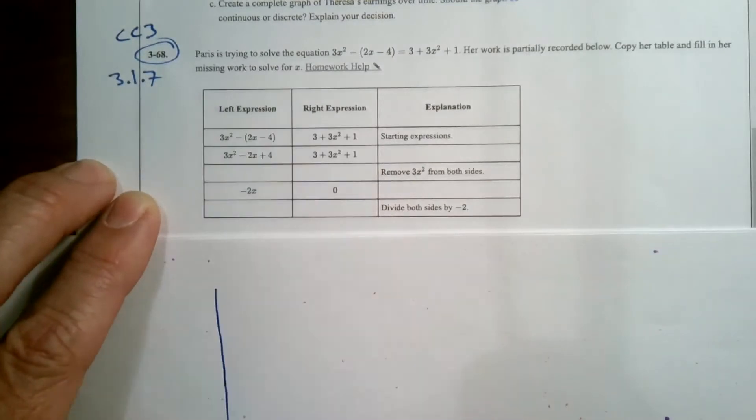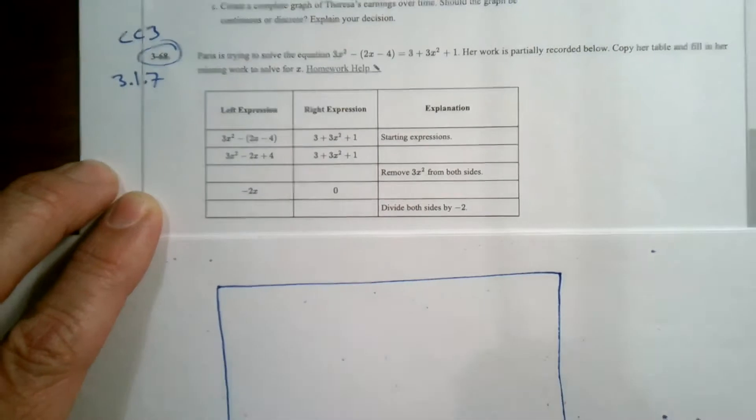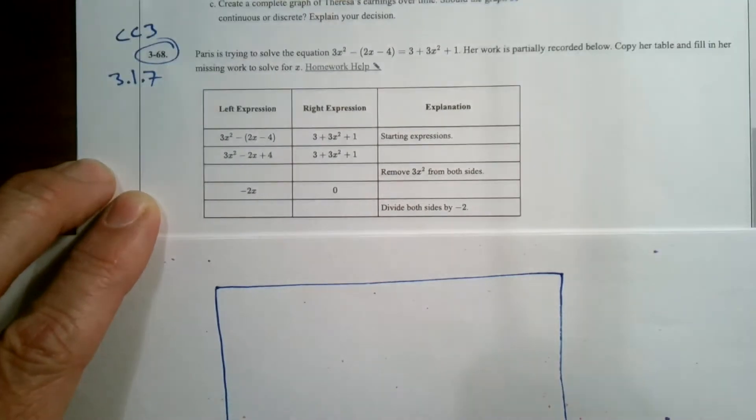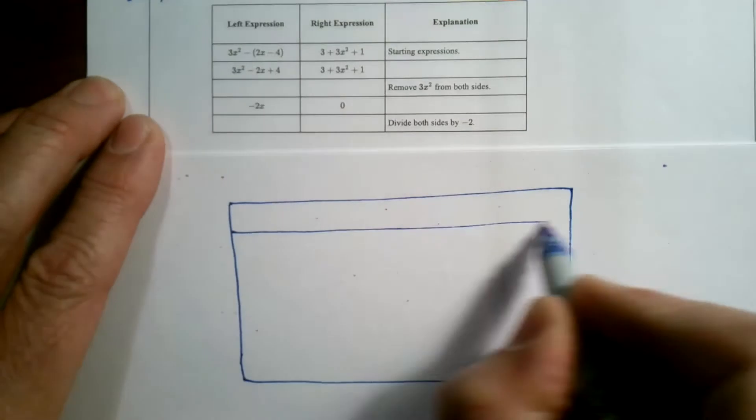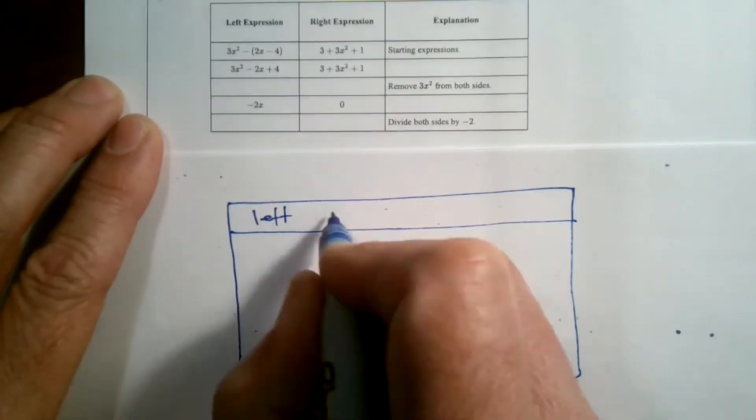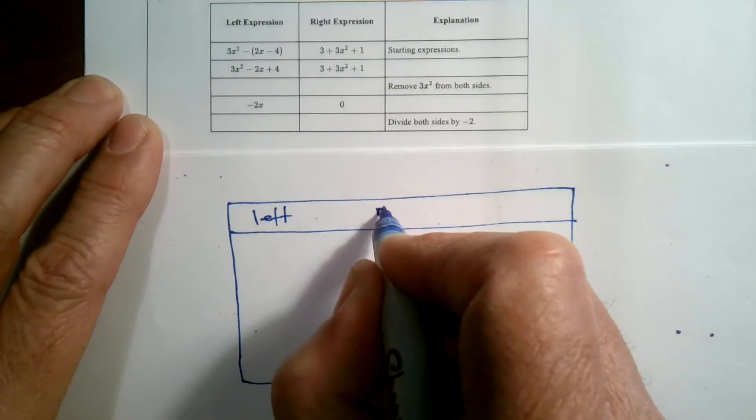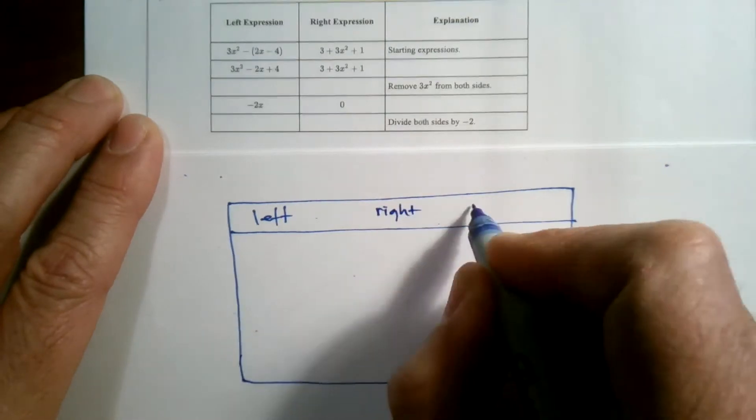So let's do that. Let's copy the table so I can go through this process and show you a little clearer what she's got going on here. So we have the left and then the right and then the explanation.